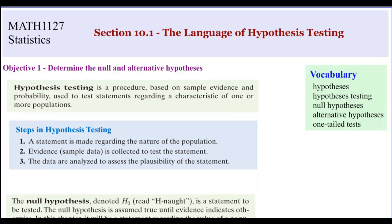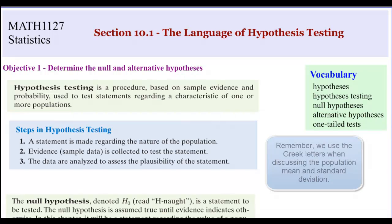When we're doing a hypothesis test, we're going to make a statement regarding the nature of the population. We'll typically talk about the proportion, which is P; the mean, so mu; or the standard deviation, sigma. And again, it's about the population, so that's the reason it's mu and sigma.